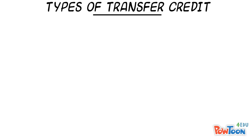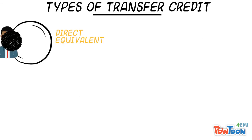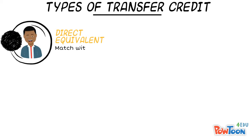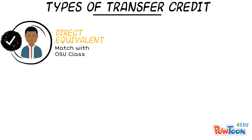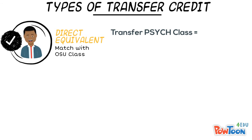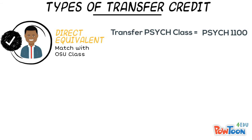The first way a class might transfer is as a direct equivalent. This means that the content of the class at your previous institution is close enough to the content of a class here at Ohio State for you to move on to higher level courses. For example, if you took an Introduction to Psychology class at your previous institution and it transfers as Psych 1100, that means it is a direct equivalent. You would have credit for that specific psych class and would be able to take higher level psych classes at Ohio State.